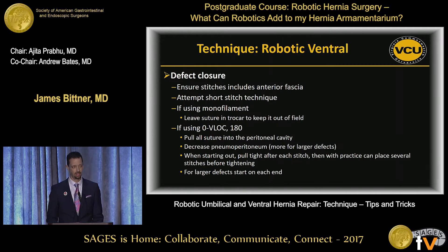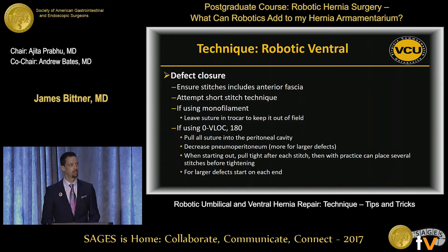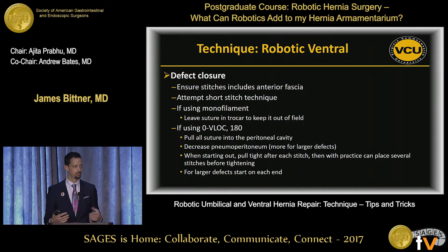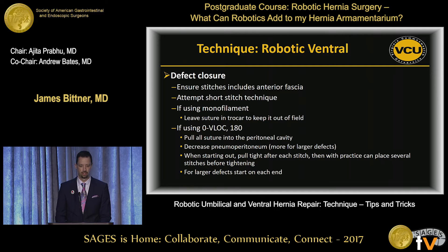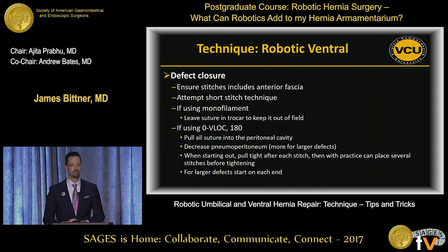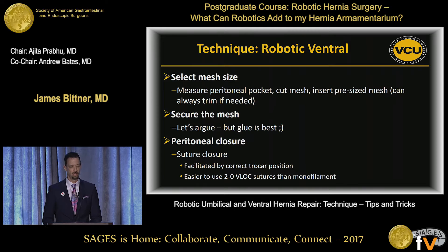As far as defect closure, one of the key components of any robotic ventral hernia repair is to ensure you have anterior rectus sheath and linea alba. If you have linea alba available, you don't want to simply close the posterior sheath or stitch only into the muscle — the sutures will pull out and you're not closing the defect. Depending on what type of suture you use, some are self-locking and some choose monofilament. If you use self-locking stitches, particularly on larger defects, it's a little bit easier when you first start to pull the sutures through each time and tighten as you go.